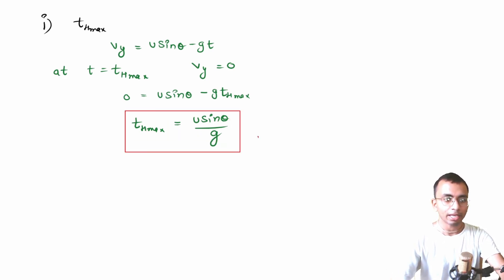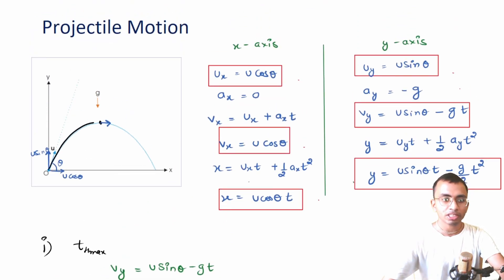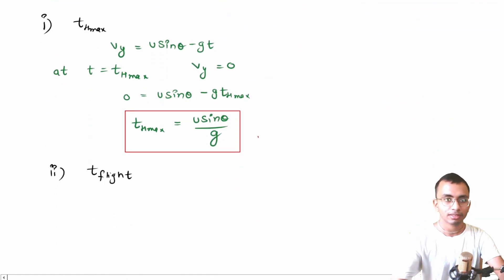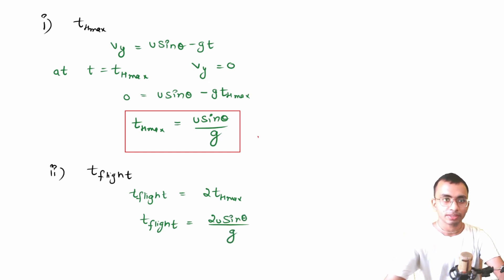We got the time it takes to reach the maximum height. Second thing we will find is time of flight, t_flight. The time the particle takes to reach maximum height is the same time it takes to come back from maximum height. Therefore, t_flight is twice t_hmax. So t_flight = 2 · t_hmax = 2u sin theta / g. This is our second derivation.